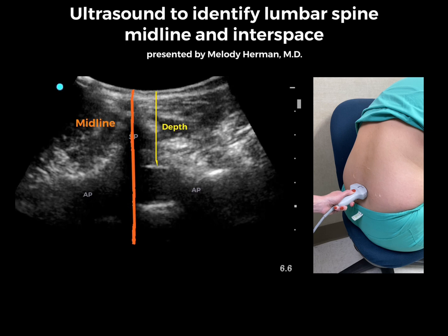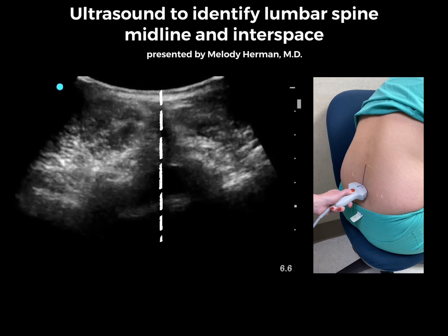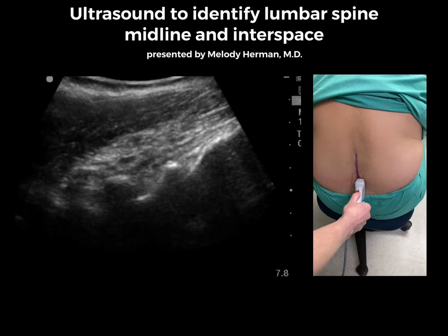Keep in mind that the actual depth where we have loss of resistance or CSF return is likely to be a little deeper, because we're pushing down on the subcutaneous tissue with the ultrasound probe. Draw a vertical line with a marking pen to identify the midline.